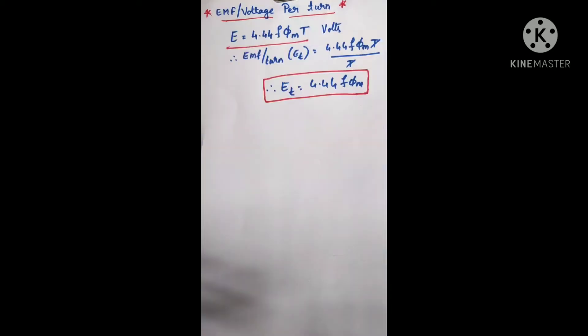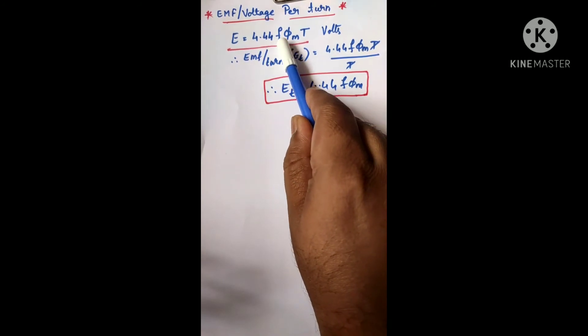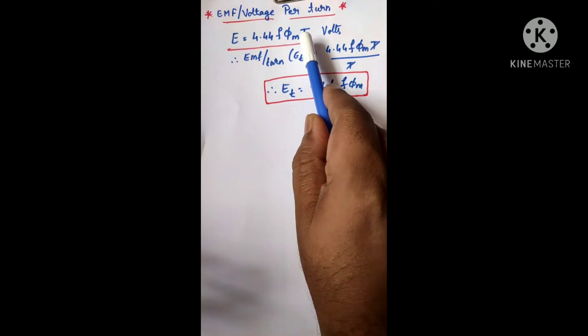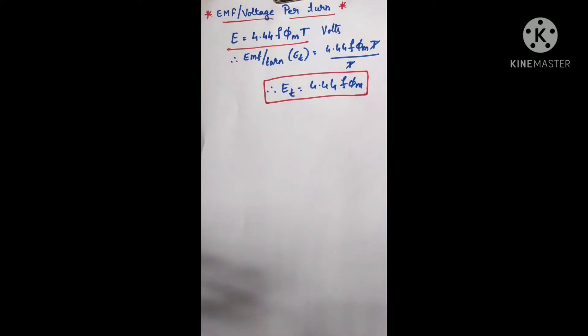Hi everyone, welcome to Knowledge Center. In the previous session we discussed the output equation of single-phase transformer as well as three-phase transformer. In this session I am going to explain the derivation of the expression for voltage per turn. We know that the EMF induced in a transformer can be given as E = 4.44 × frequency × maximum flux × number of turns.